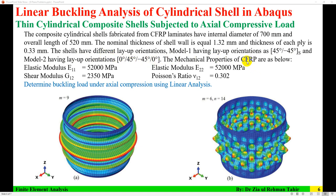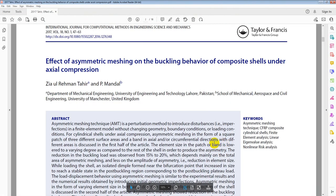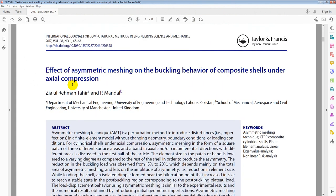The mechanical properties of CFRP are as follows: Elastic modulus E11 is 52,000 MPa, elastic modulus E22 is 52,000 MPa, shear modulus G12 is 2350 MPa, and Poisson's ratio is 0.30. The objective is to determine the buckling load under axial compression using linear analysis. The data for these two shells is taken from a reference paper.